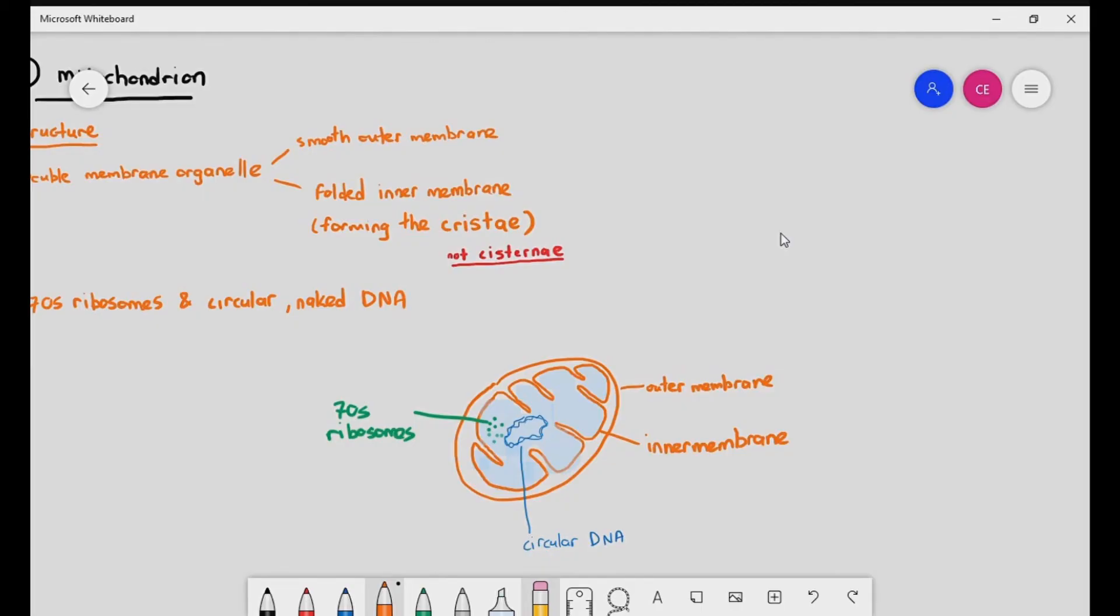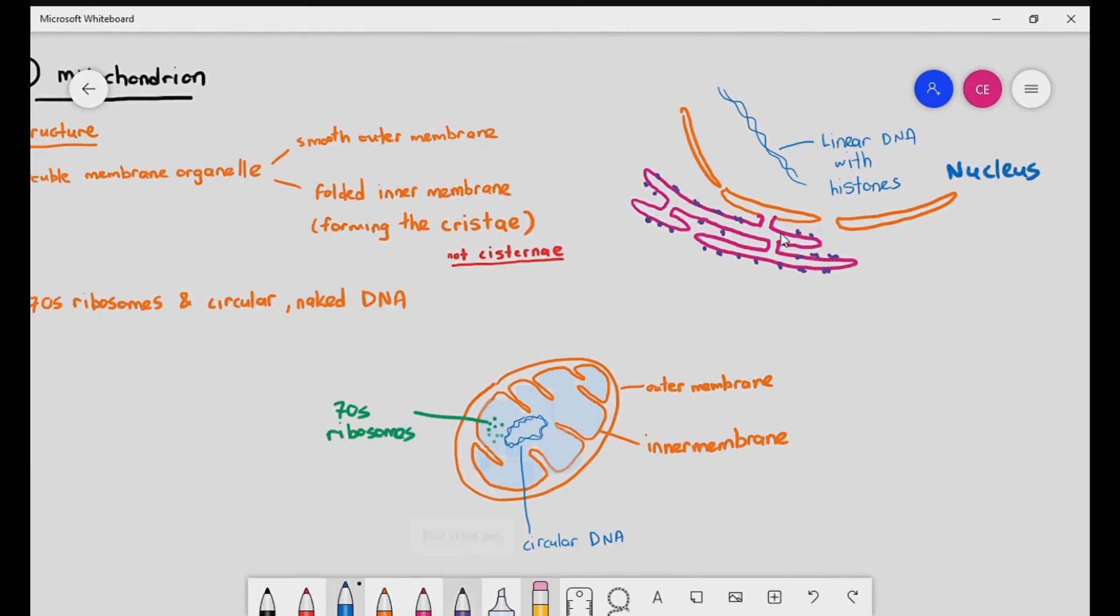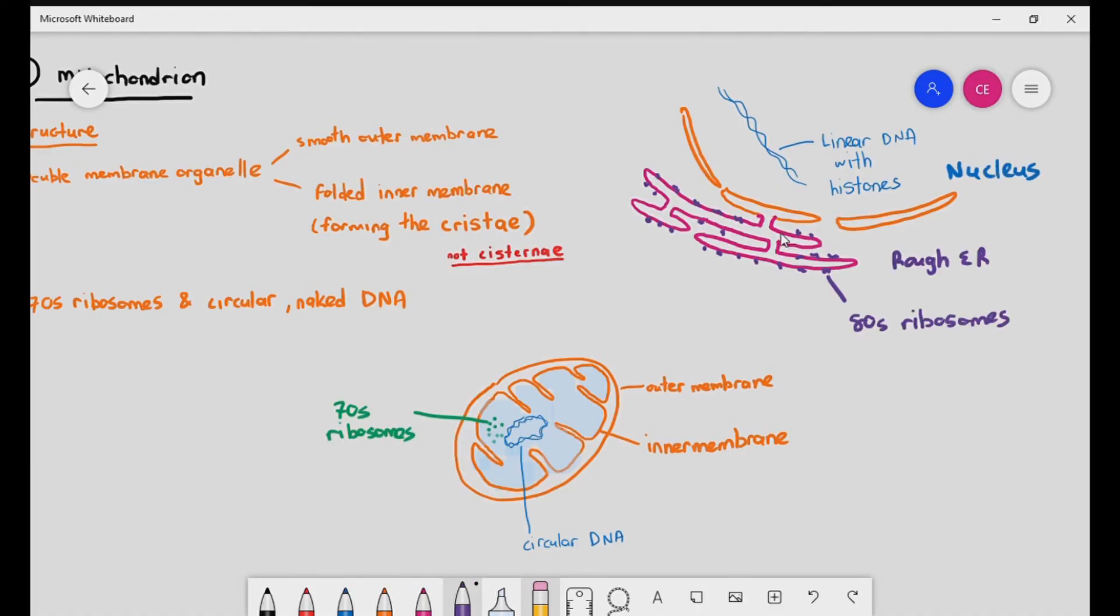This is a comparison between the nuclear membrane which is also a double membrane organelle. The DNA inside the nuclear membrane is a linear DNA with histone proteins, also referred to as the chromatin. Just a bit of revision to the rough endoplasmic reticulum: the membrane of the rough endoplasmic reticulum can be directly connected to the nuclear membrane. Now what type of ribosomes are there on the surface of the rough endoplasmic reticulum? Based on our previous lesson, we know that the rough endoplasmic reticulum has 80S ribosomes on its surface.